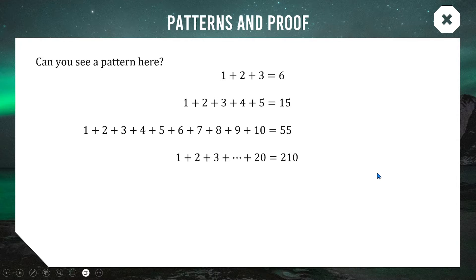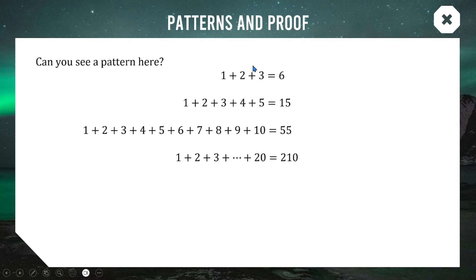Pause the video and have a think if you want to. The shortcut is: you take the last number in the string — 3, 5, 10, 20 — multiply it by the next number — 4, 6, 11, and 21 — and then halve that answer. So 3 times 4 is 12, half of 12 is 6. Five times 6 is 30, half of 30 is 15.